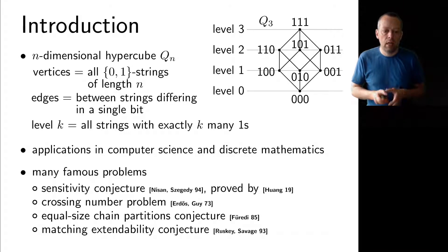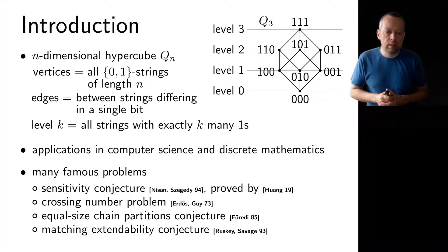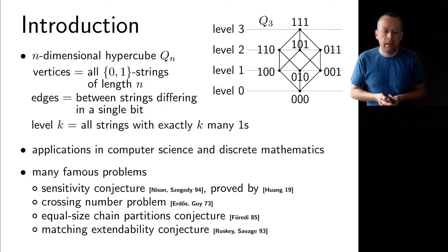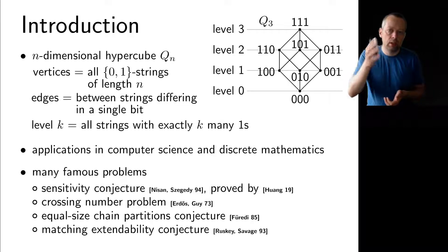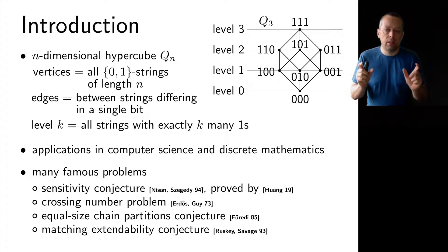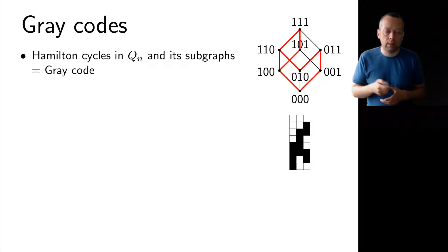There are also a number of very famous and prestigious problems connected to this hypercube. For instance, there is the sensitivity conjecture due to Nisan and Szegedy, which was famously proved recently. There is also the Erdős–Gauss crossing number problem, a conjecture due to Füredi about partitioning the cube into chains of equal size, and the Ruskey–Savage problem on extending a matching in the cube to a Hamilton cycle.